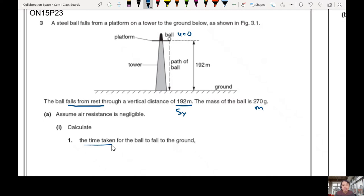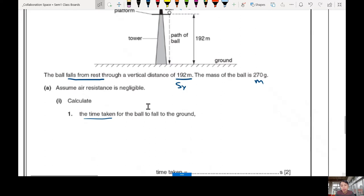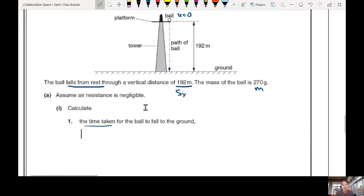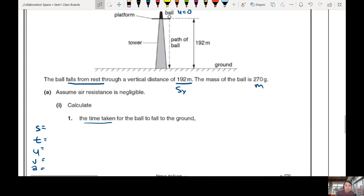Calculate the time taken for ball to fall. Cannot take stopwatch and time, so you have to use your SUVAT to calculate. If it's an experiment, you can take stopwatch and time. But now we want to do some calculations. So what do you have? You have SUVAT variables. You can see what you have and use the equation. Distance, 192. Only vertical, no horizontal. Time, we don't know. Initial velocity, zero. Final velocity, don't know, don't care. Never mind. Acceleration, yes, we know.